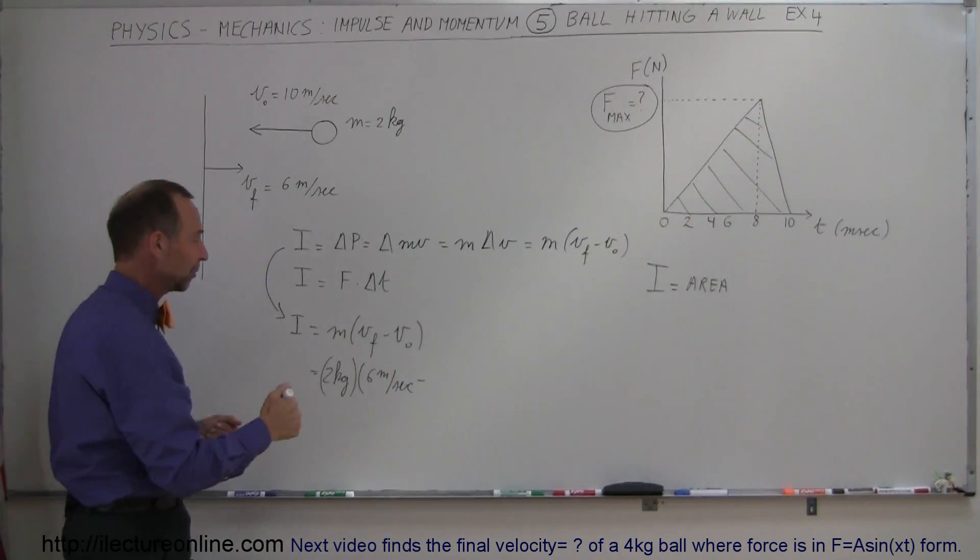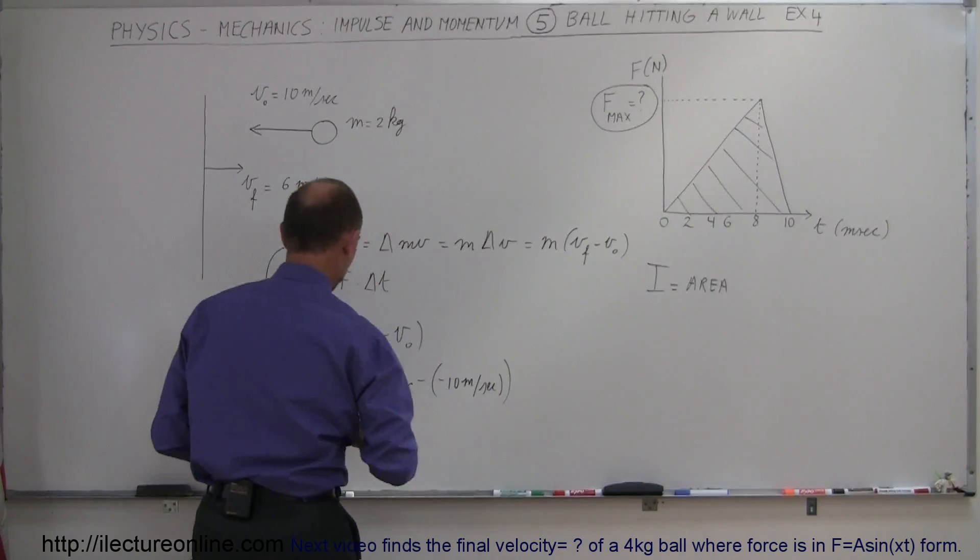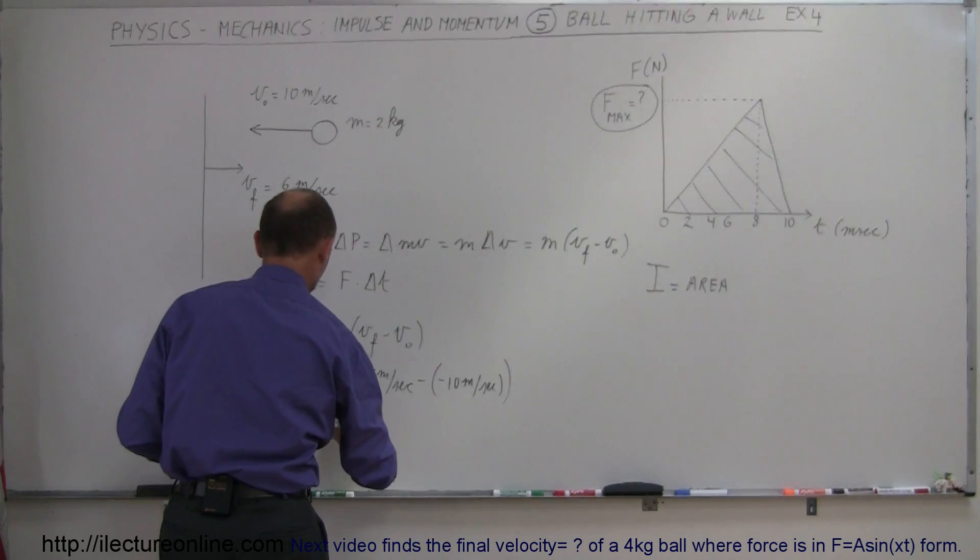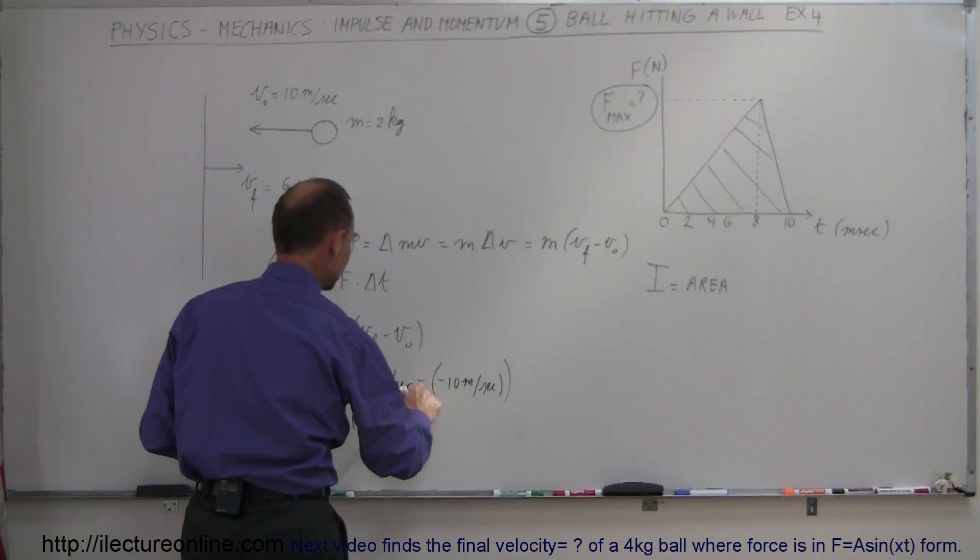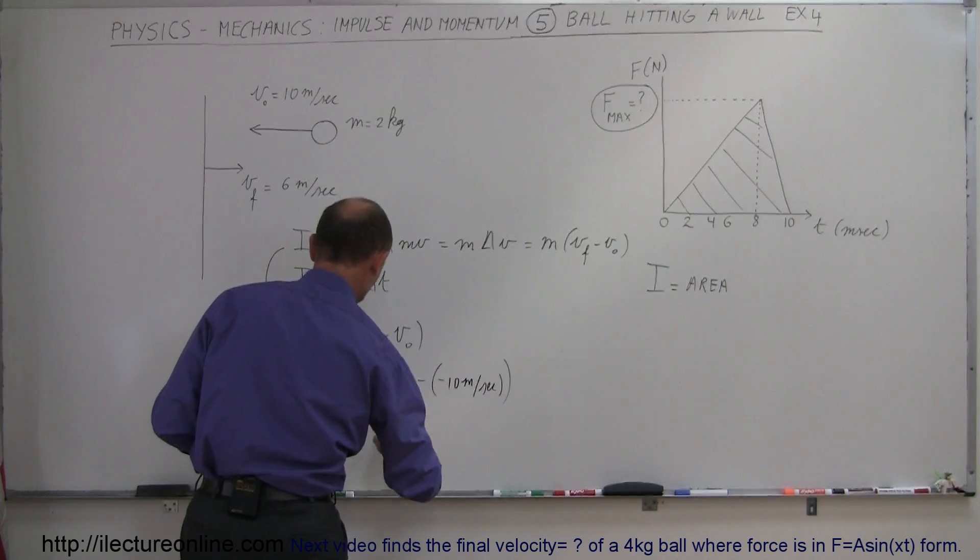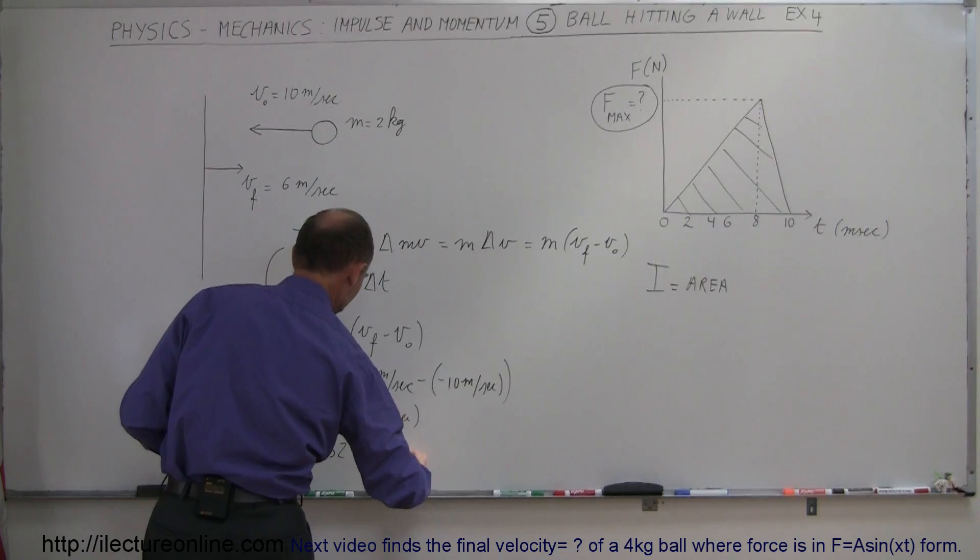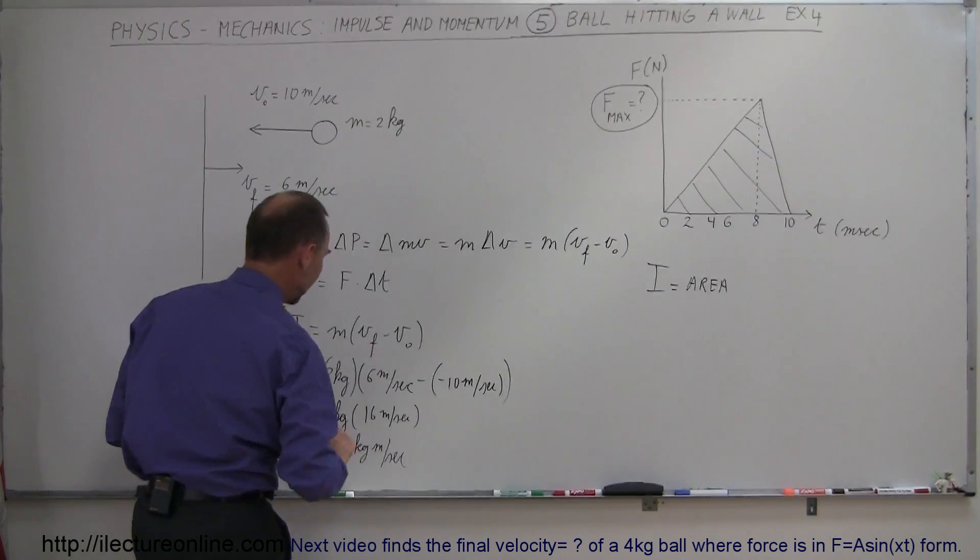All right, and so this is equal to 2 kilograms times 6 minus a minus 10, that's a plus 16 meters per second. And so this would be equal to 32 kilograms meters per second. And so that's equal to the impulse of that collision, or the wall pushing against the ball, making the momentum of the ball change.